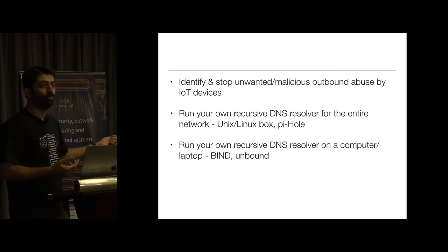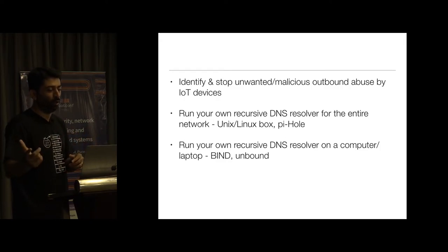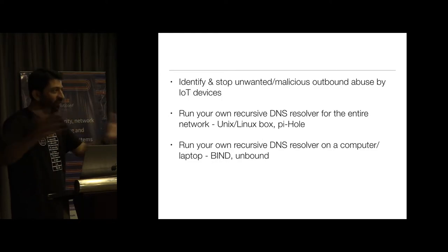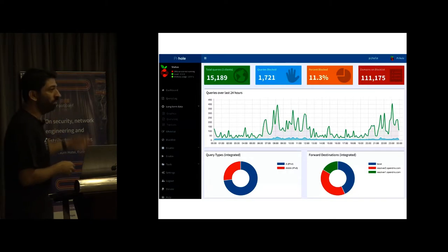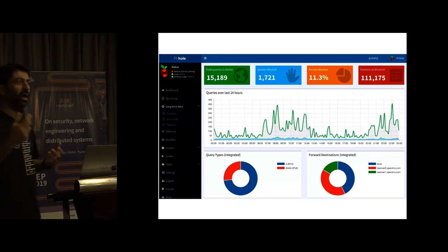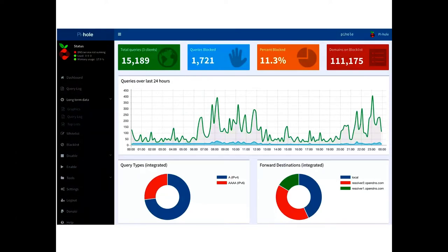You could also use Pi-hole. Pi-hole is technically not response policy zones — it is going to block for everyone in the network, it is not selective, there are no policies, it is a blanket ban for everyone. But it is something you can explore: take a Raspberry Pi, install Pi-hole software — which is basically dnsmasq running behind the scenes — and you will be surprised at what DNS requests your Alexa or TV is making even when you are not watching it.